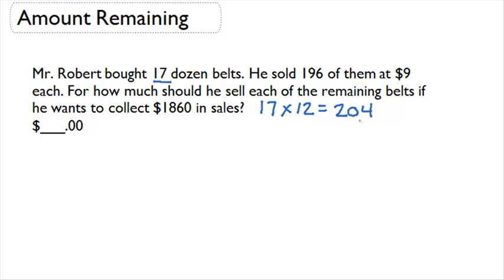Mr. Robert started off with 204 belts. Now we want to know how many belts he has left and how much money he's already made. So let's start off with how many belts he has left. He started off with 204 and he's already sold 196 of them, which means he's left with eight belts that he still needs to sell.